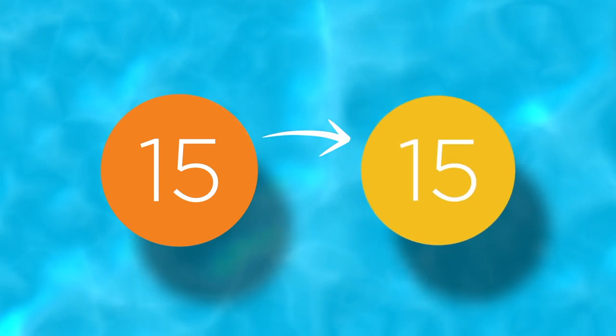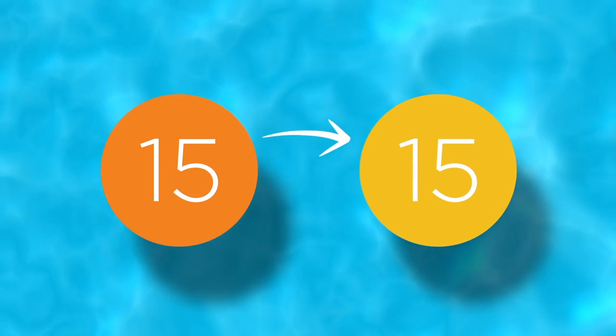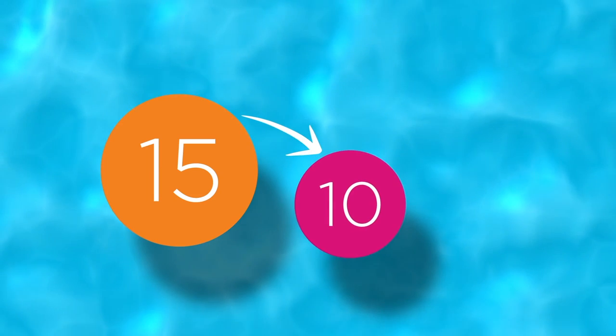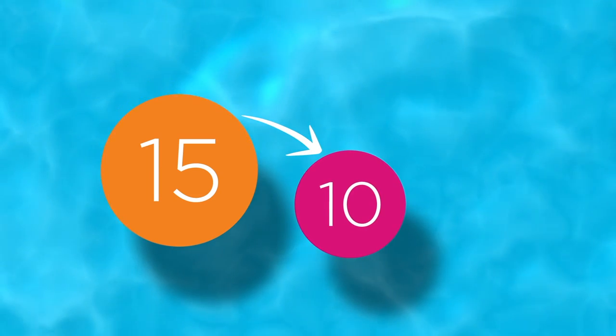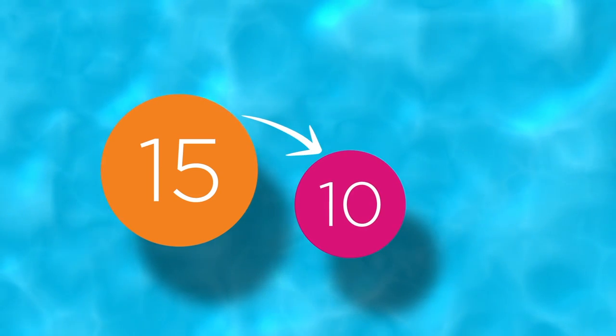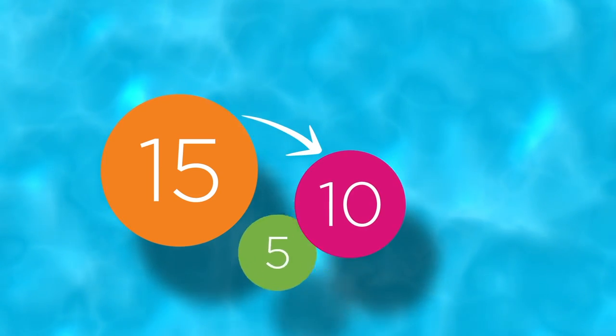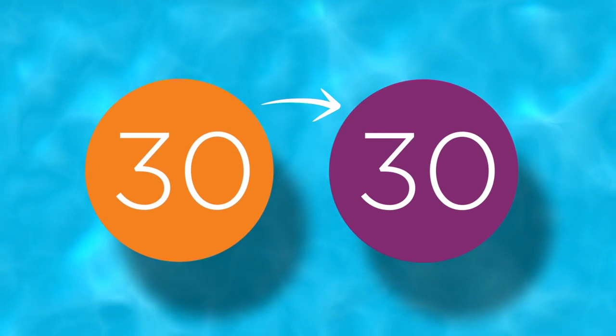One of the great benefits of your RCI membership is the flexibility. You can exchange into a vacation that has the same value as your deposit. You can trade down and exchange into vacation accommodations with a lower value than your deposit and receive a deposit credit to use toward another vacation. Or you can trade up by combining multiple deposits to book an exchange vacation with a greater value than your deposit.